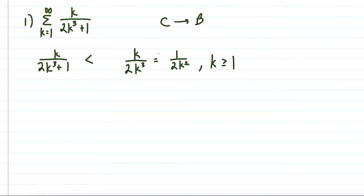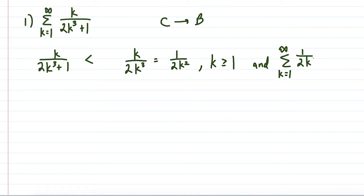The reason we specify k ≥ 1 is that something like k = 0 would result in something undefined. So we take the resulting expression and write the series from k = 1 to infinity of 1 over 2k². Since this inequality holds — we have a bigger expression — and this resulting series is a convergent p-series multiplied by one half, the original series is going to converge as well by the comparison test.